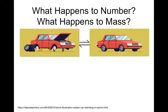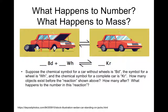So what happens in a chemical reaction? Let's consider a macro example. Let's suppose that putting a car together is like a chemical reaction. The chemical symbol for a car without wheels is BD, the chemical symbol for a wheel is WH, and the chemical symbol for a complete car is KR.